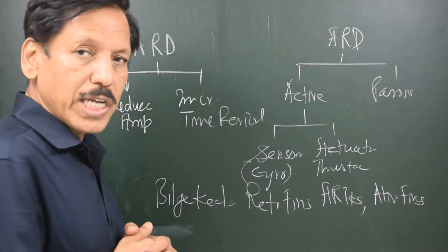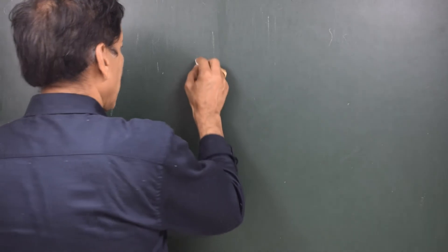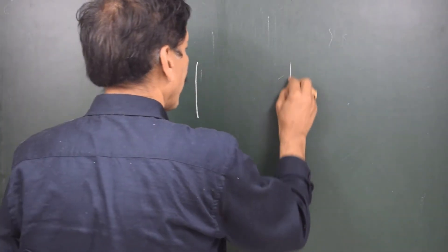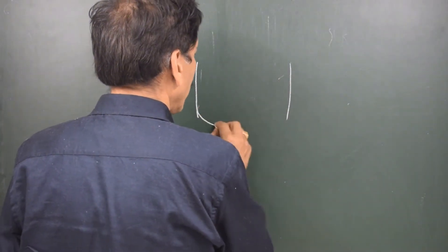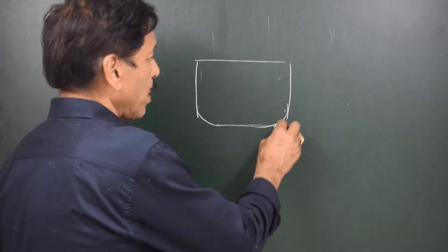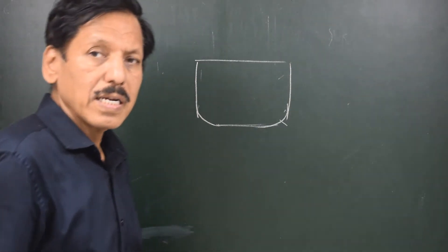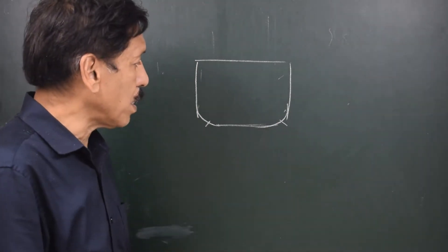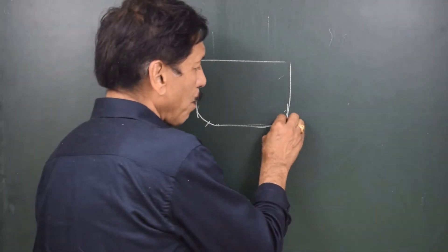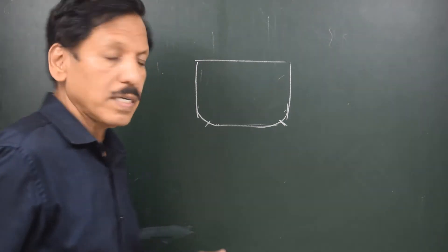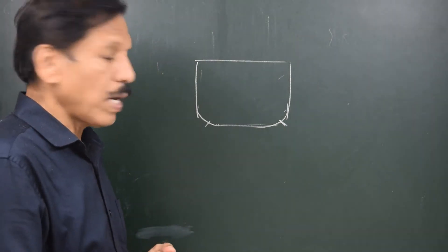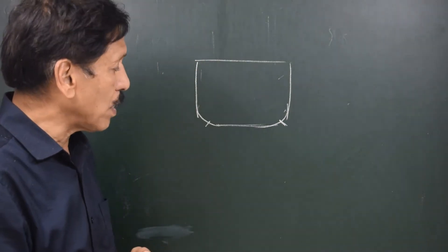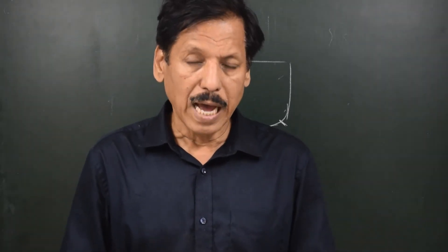Let's talk about bilge keels first. Bilge keels are fitted at the turn of the bilge. They might not be fitted over the entire length — maybe over the parallel body, about 50 to 60 percent of the ship's length. These bilge keels are plates protruding at the turn of the bilge, and they might be about 40 to 50 centimeters in depth.